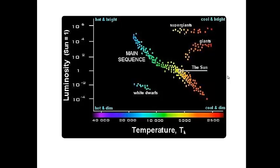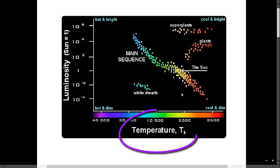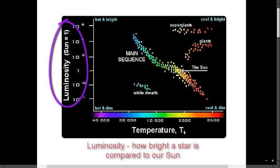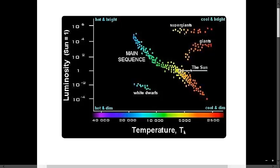The HR diagram graphs stars based on their temperature and luminosity. You can see temperature graphed on the x-axis with the hottest stars on the left and the coolest stars on the right. Luminosity is graphed on the y-axis. Luminosity is how bright a star is compared to our sun. Our sun has a luminosity of 1. Brighter stars are graphed above it and dimmer stars below.